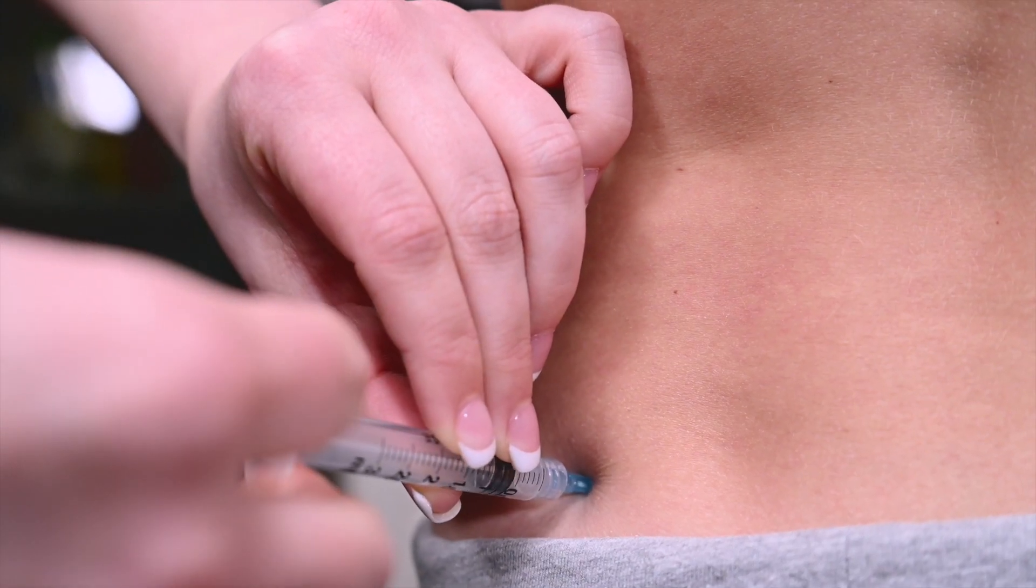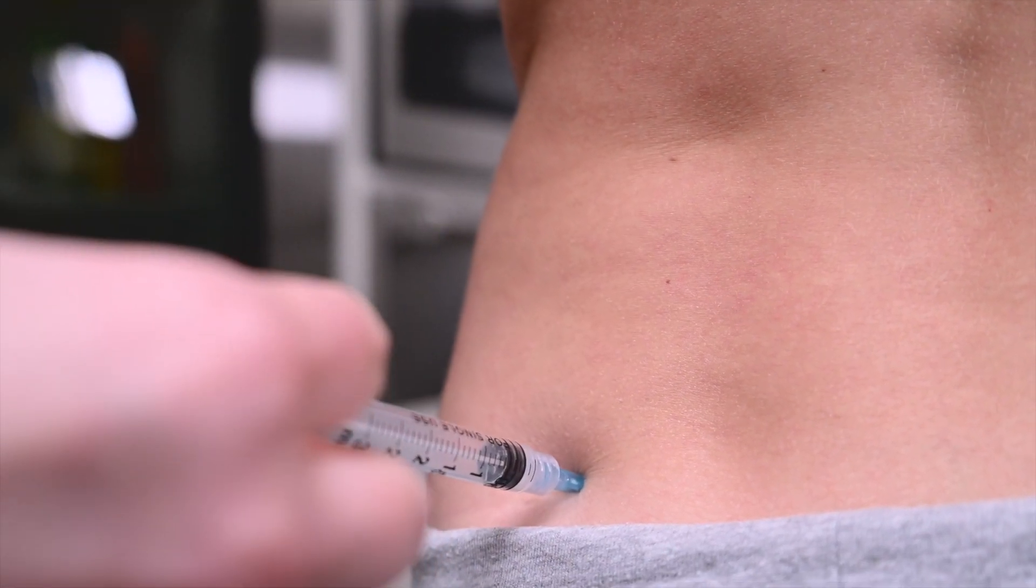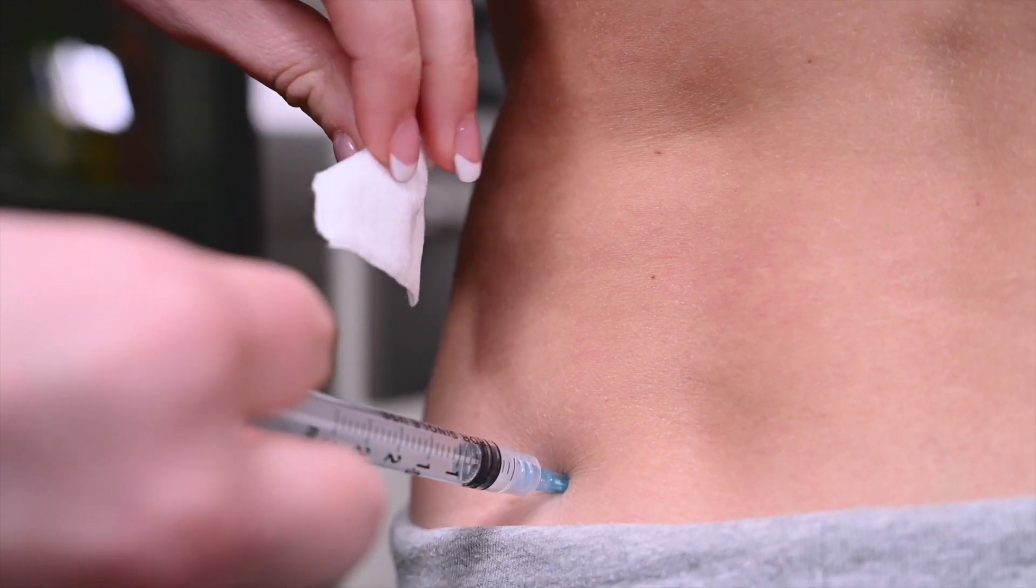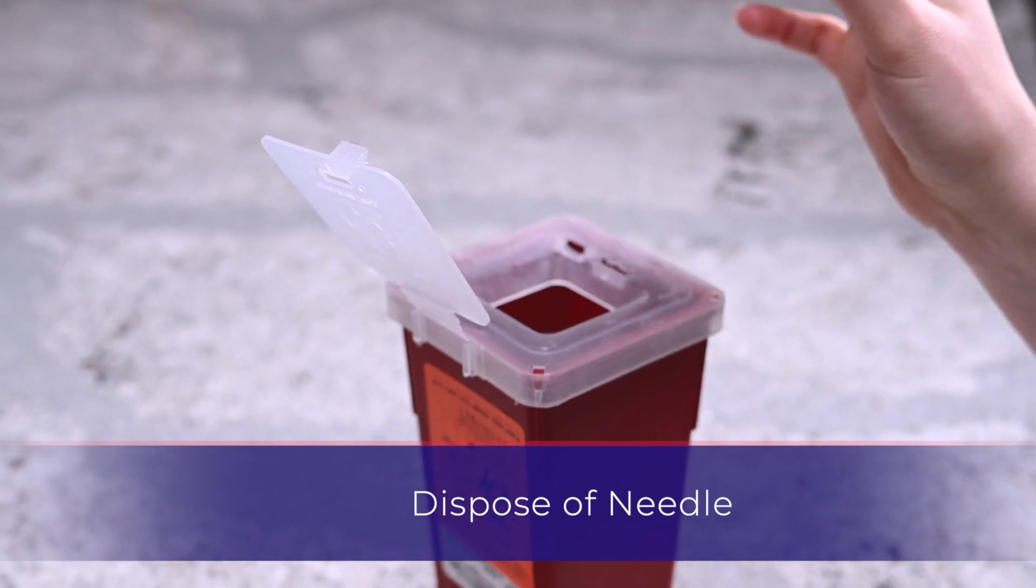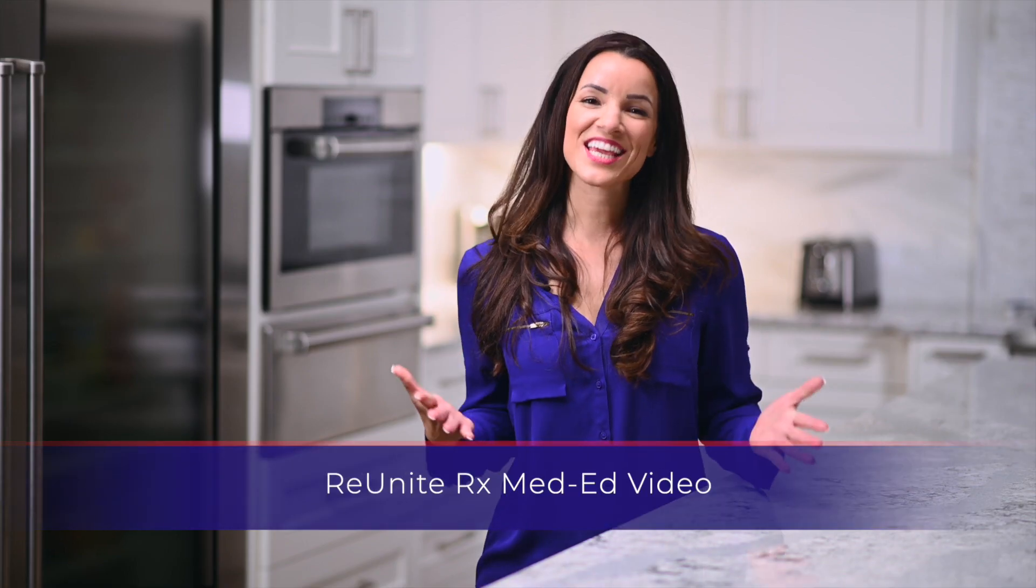Push the plunger until all the medication transfers into the injection site. Gently remove the needle and apply pressure with the gauze. Dispose of the used syringe into the designated sharps container.